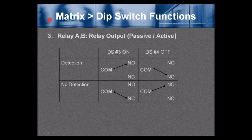DIP switch 3: Relay A — relay output passive or active. When detection occurs, common and normally open are connected. With DIP switch 3 on and no detection, common and normally closed are connected. With DIP switch 4 off and no detection, common and normally closed would be shorted; common and normally open would be open.